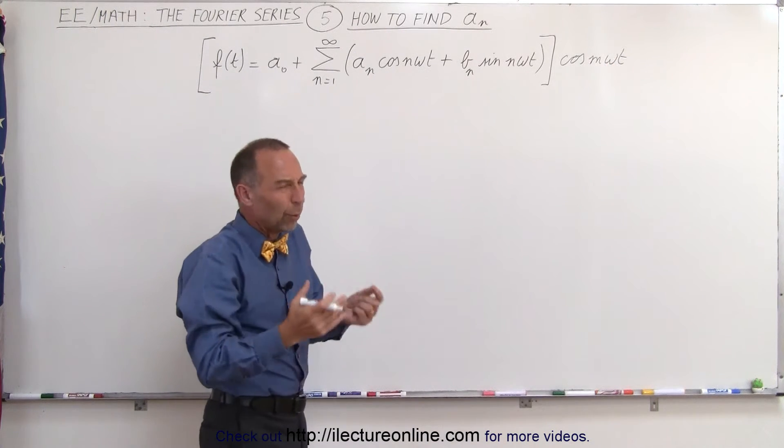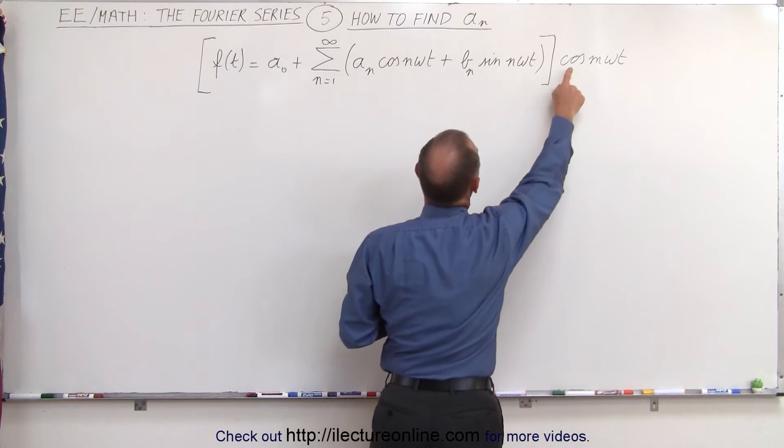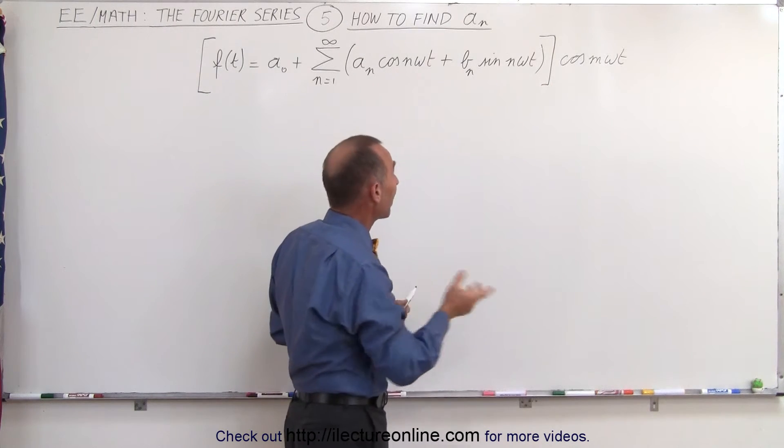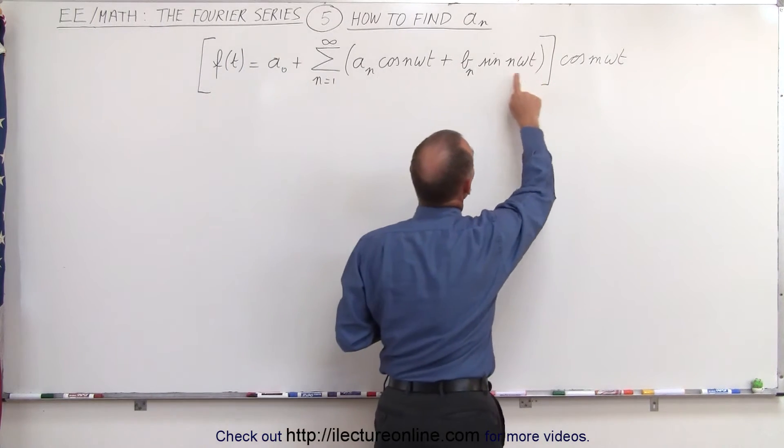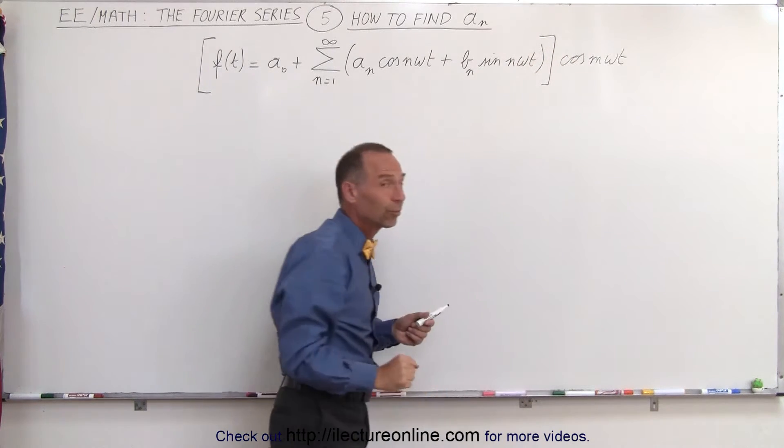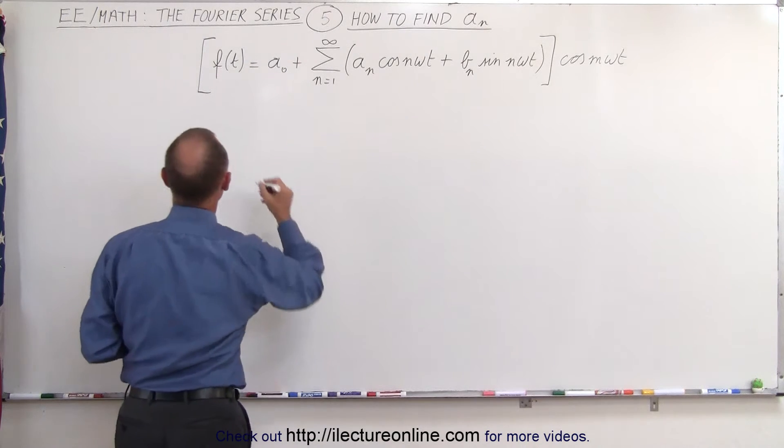where m can be any integer. Again, you say, well, why do we do that? Because when we multiply this times this, we get cosine squared, and we can find a particular value for that when we integrate. But when we integrate the sine times the cosine from 0 to t, that simply will disappear. It will become equal to 0. So we're going to multiply this through and see what we get.